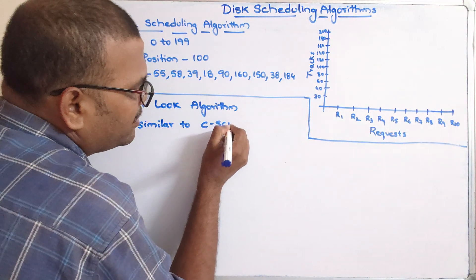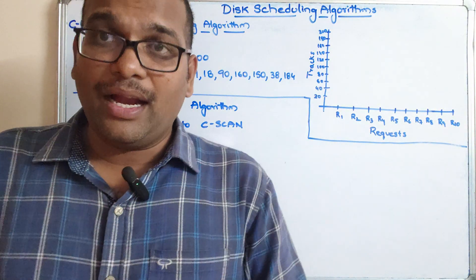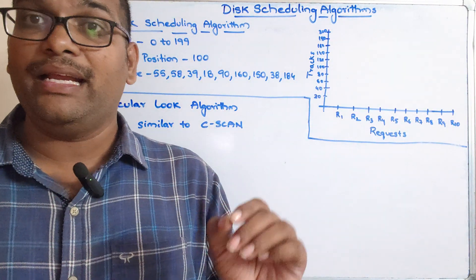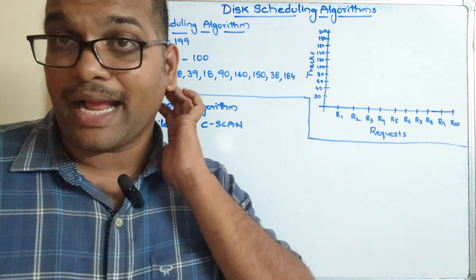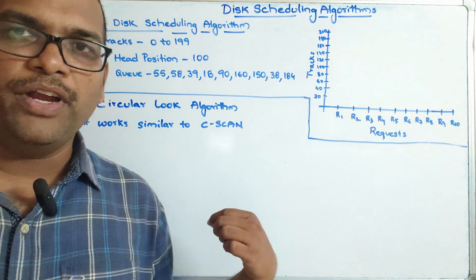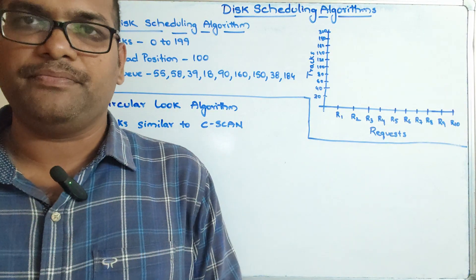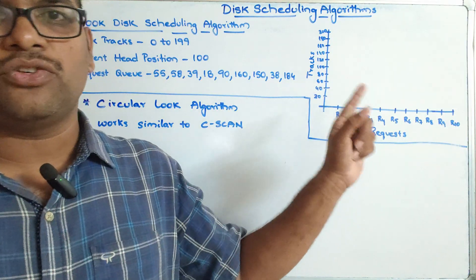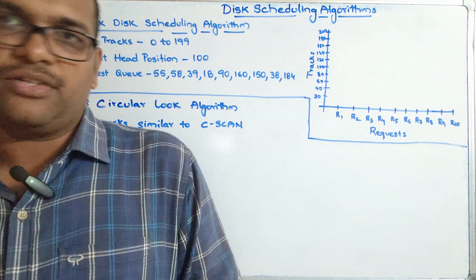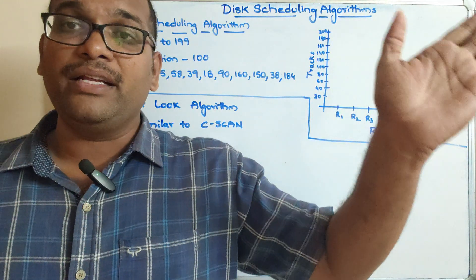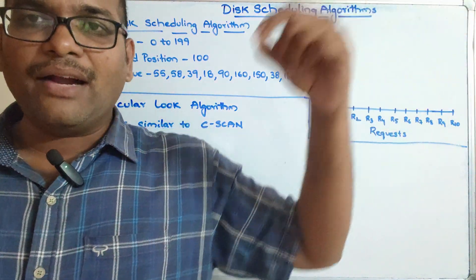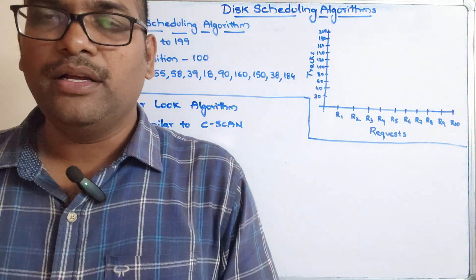C-LOOK works similar to C-SCAN, which is a circular scan. It starts from the current head position and moves in one direction, processing all requests. Whenever it reaches the last request in that direction — not the last track, but the last request — it immediately moves towards the lowest request in the other direction. Unlike LOOK, it does not process requests during the reversal; it goes directly to the lowest request.